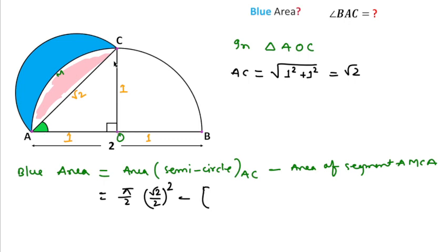Area of this quadrant AMCAO is π over 4 R squared, where R is 1, so 1 squared minus area of this triangle AOC, which is 1 over 2 times base times height, so 1/2 times 1 times 1.